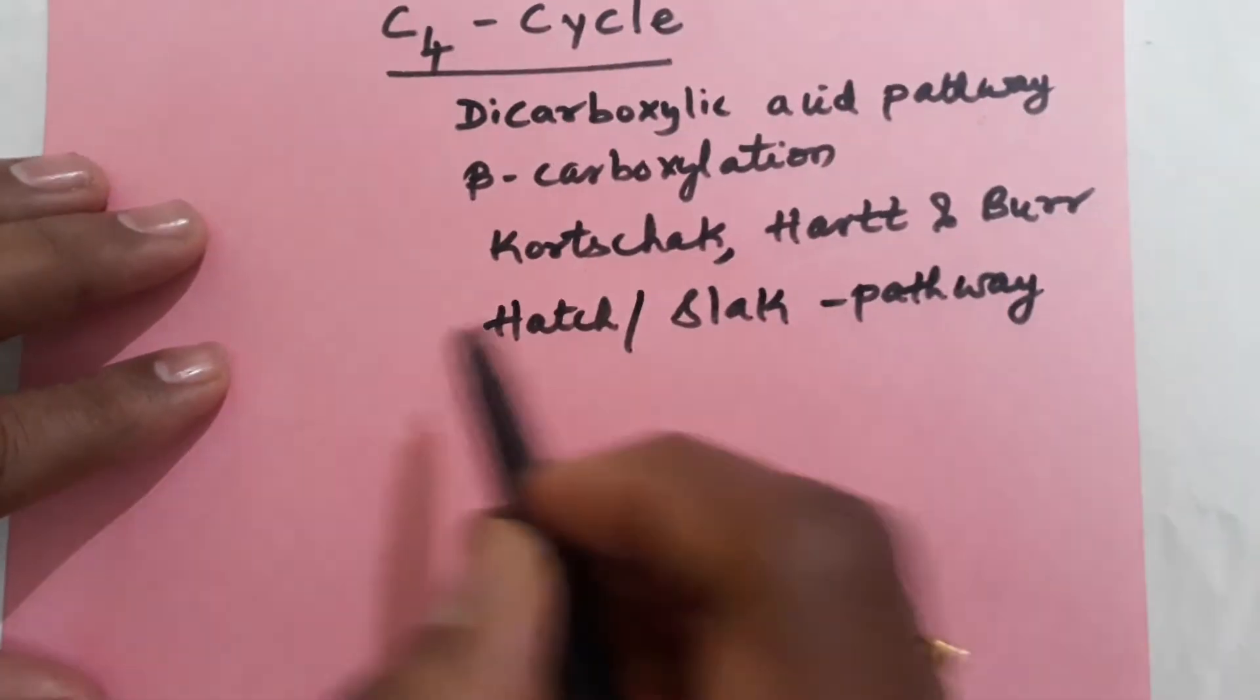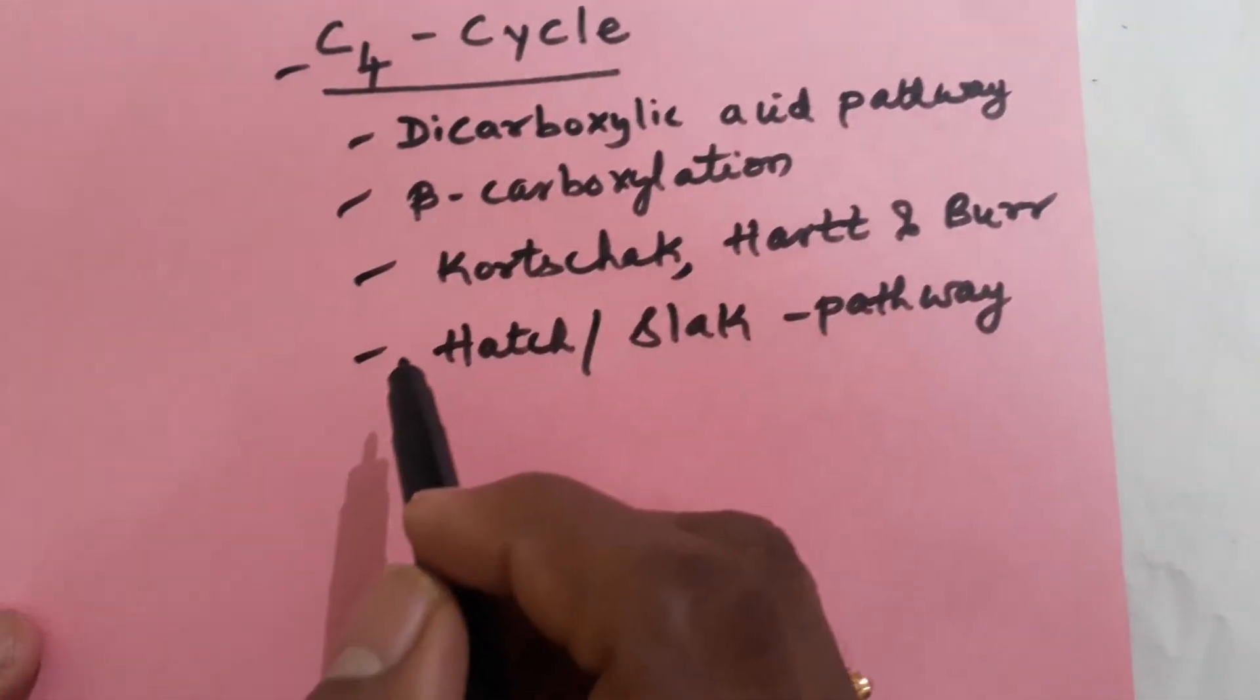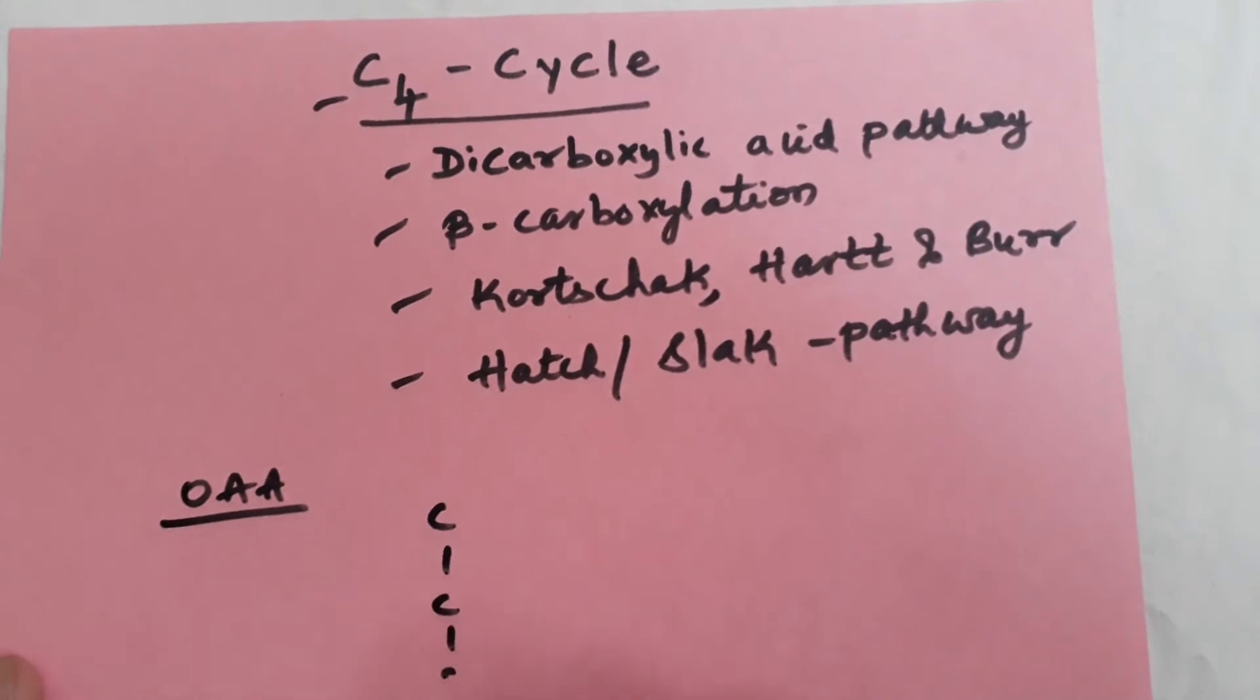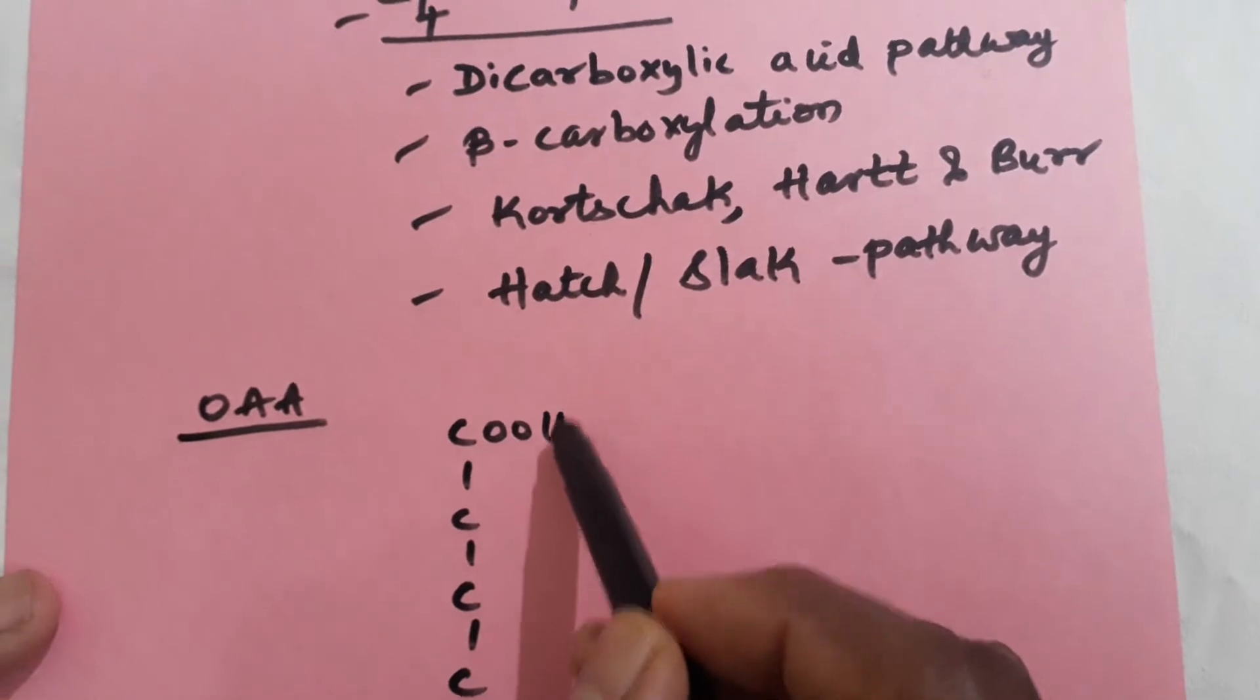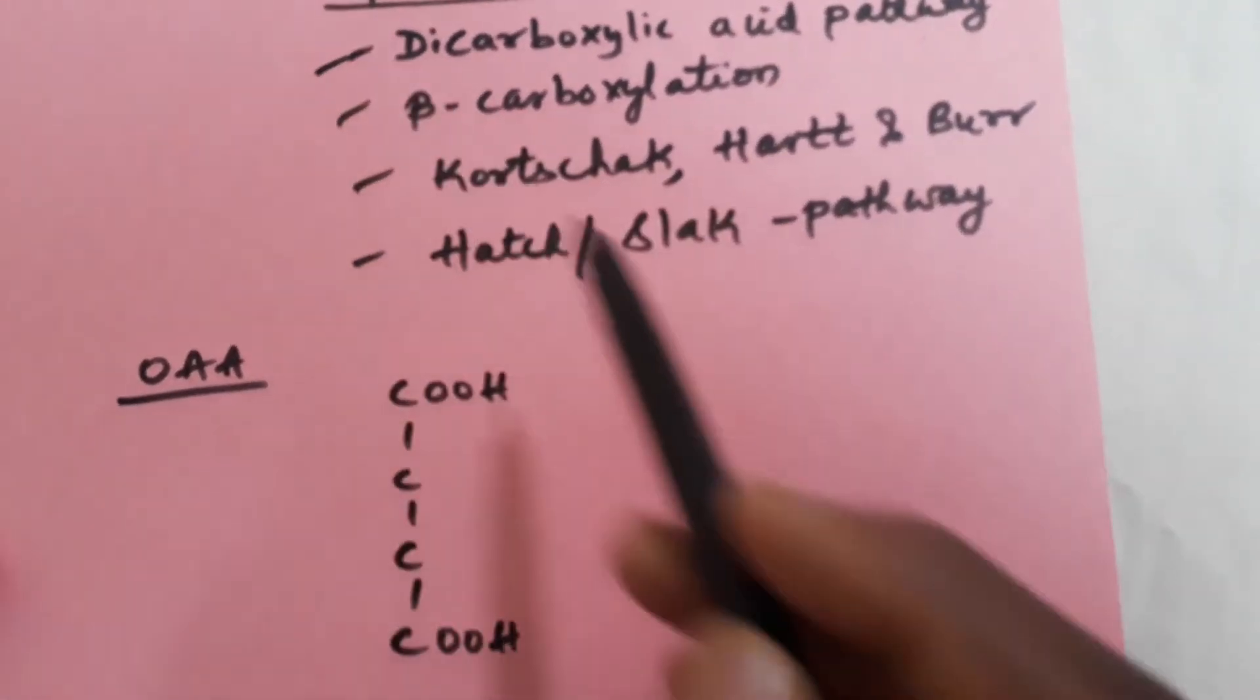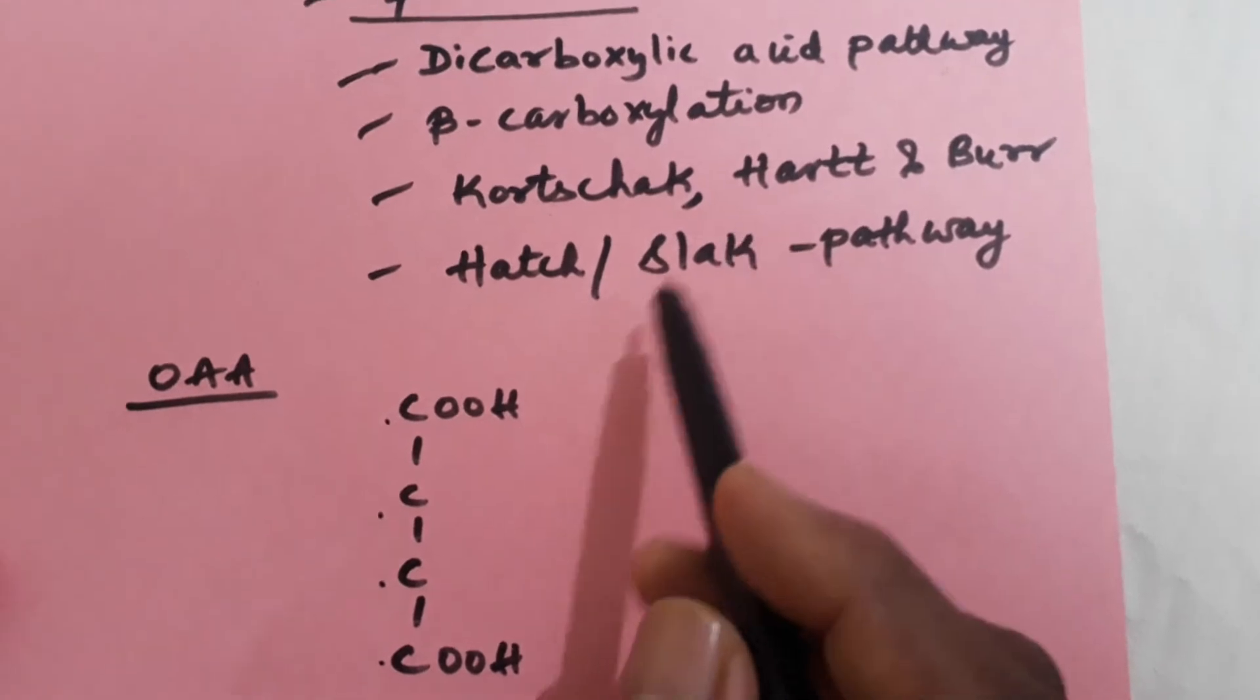These all names belong to one cycle. In the C4 cycle, some intermediates are formed like oxaloacetate acid, which is a 4-carbon compound. The first carbon has a carboxylic group and the fourth carbon has a carboxylic group, so it contains 2 carboxylic groups. That's why this is called the dicarboxylic acid pathway. The compound contains 4 carbons, so it's called the C4 cycle.